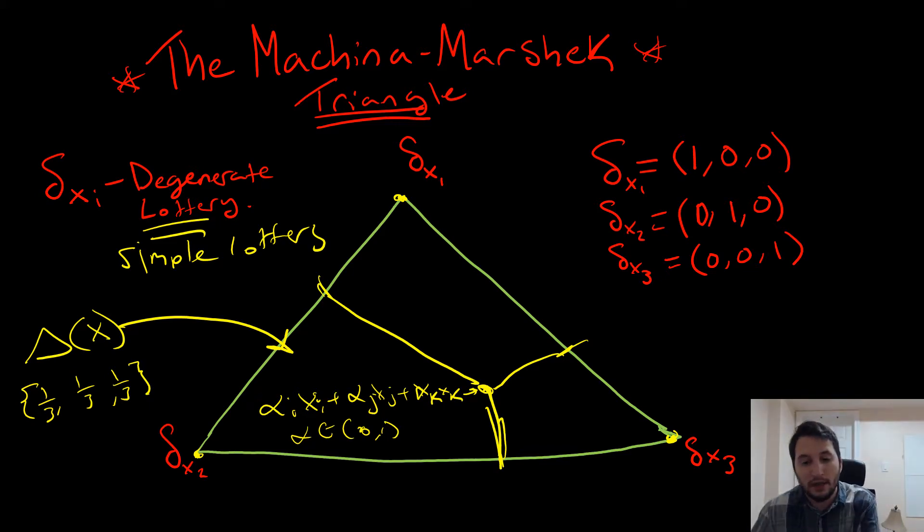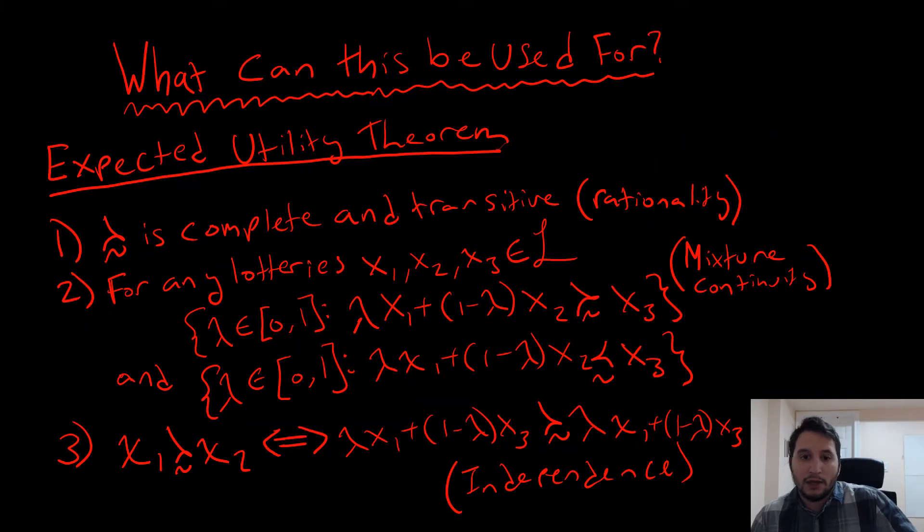So what could this thing be used for? It could be used for visualizing the requirements for our preferences to have an expected utility function underlying it. For that, we could use the von Neumann-Morgenstern expected utility theorem. It's really three parts. Some put it in four parts to break up the completeness and transitivity.